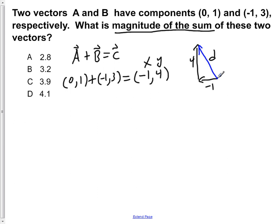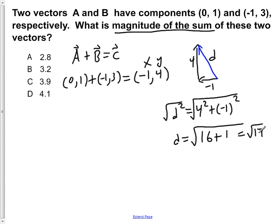So we know that d squared is equal to, in this case, 4 squared plus (-1) squared. Now to solve for d we take the square root of both sides, which would give us d is equal to the square root of 4 squared, which is 16, plus (-1) squared, which would be 1. Which gives us the square root of 17. So d is equal to the square root of 17.